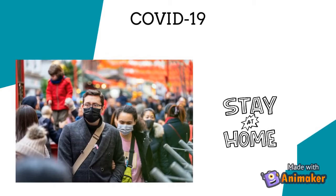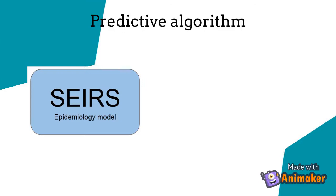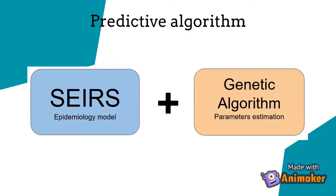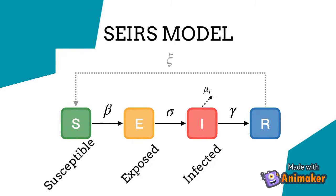Our proposed predictive algorithm combines epidemiology models and genetic algorithms. As the epidemiology model, we decided to use SEIRS — acronym of Susceptible, Exposed, Infectious, Recovered, and Re-susceptible.